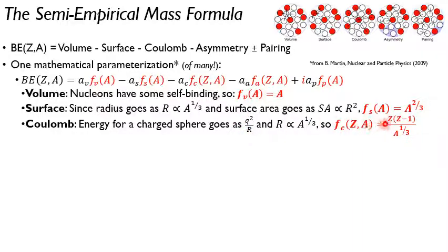Of course, a single proton doesn't repel itself. And so typically the functional form will have a Z times Z minus one in the numerator, and then divided by your proxy for the radius.